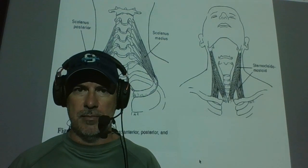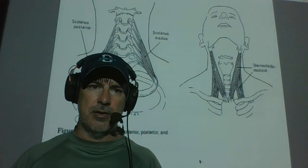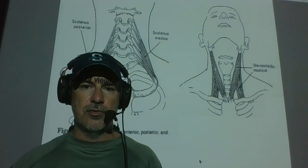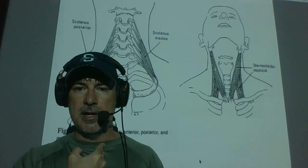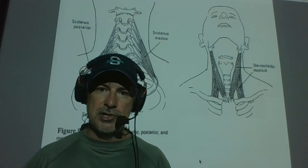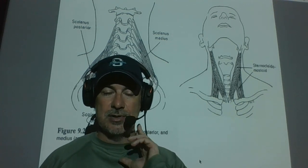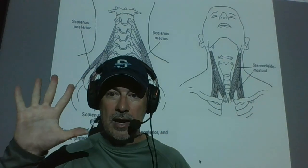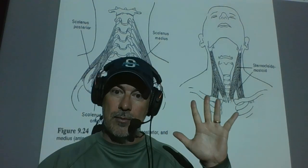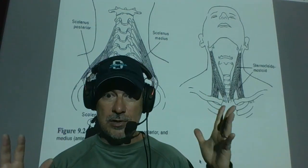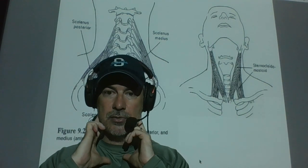The first muscles I'm going to talk about are the sternocleidomastoids — plural. Sternocleidomastoid, singular, is on the right side of your body, and you have one on the left side of your body. How do we differentiate which one? Super simple — you have a right sternocleidomastoid and a left sternocleidomastoid, just like you have a right hand and a left hand. We do the same thing for muscles — I have a right bicep and a left bicep, a right sternocleidomastoid and a left sternocleidomastoid.